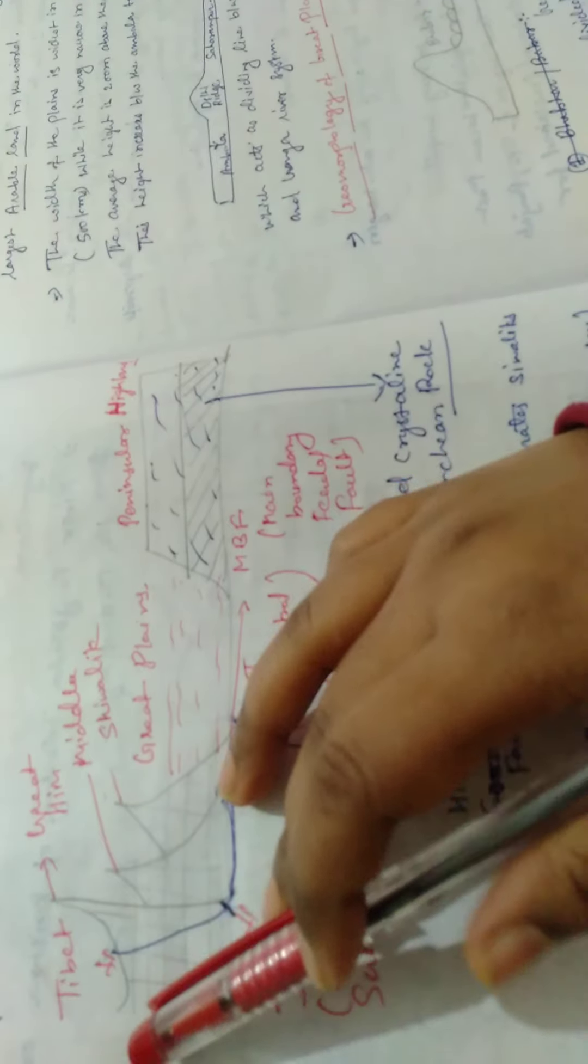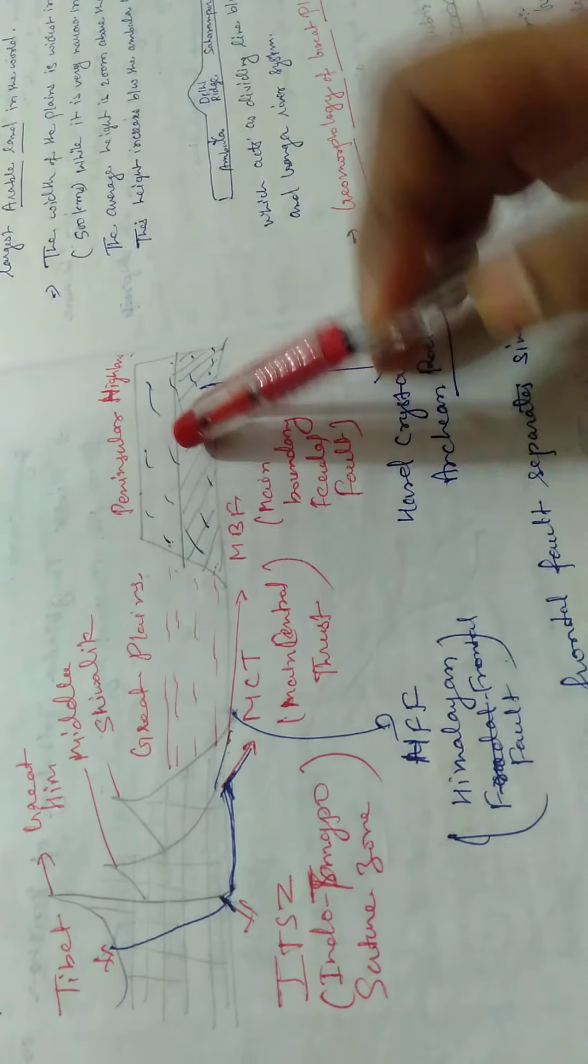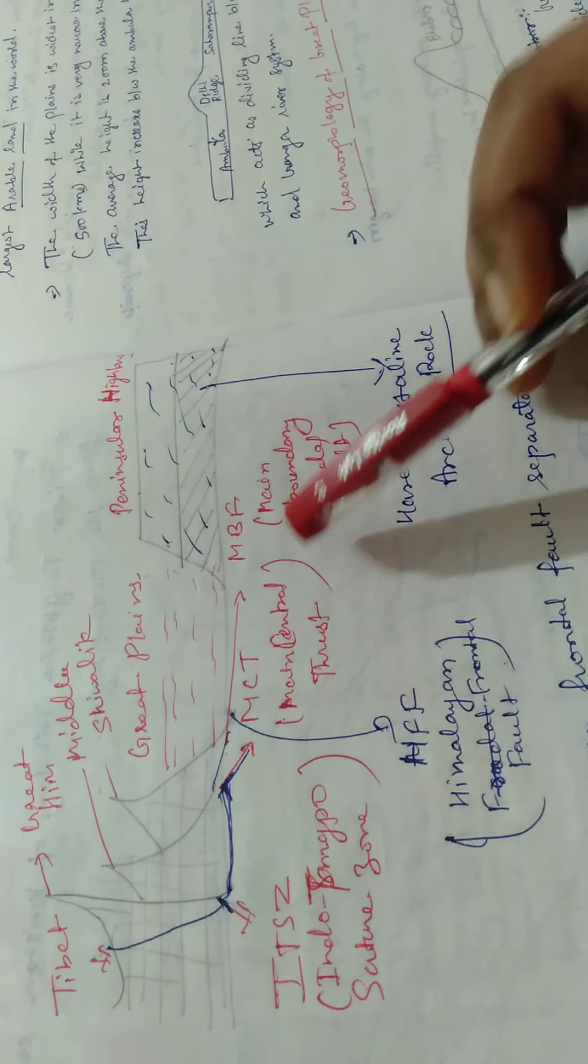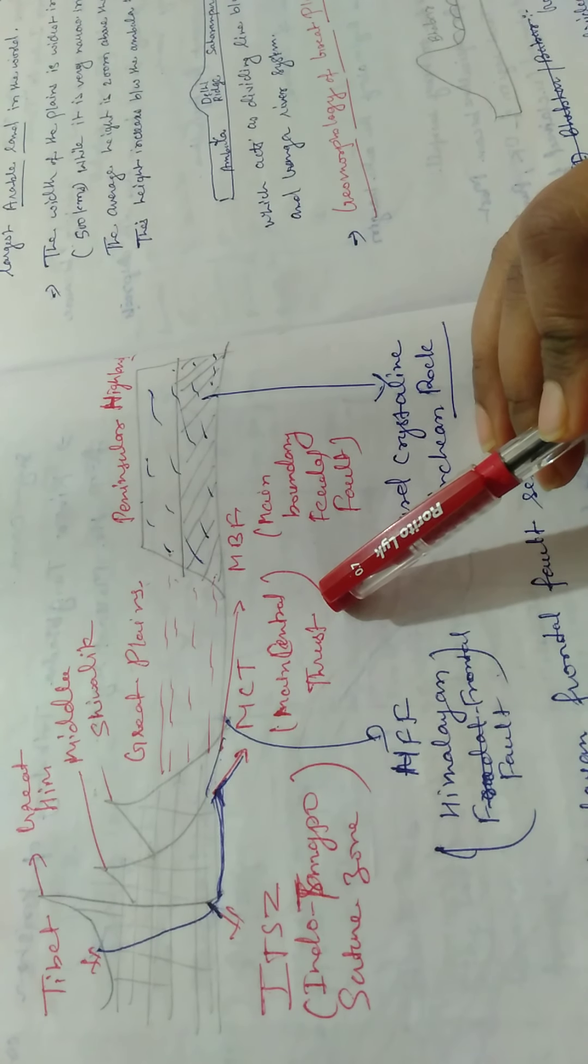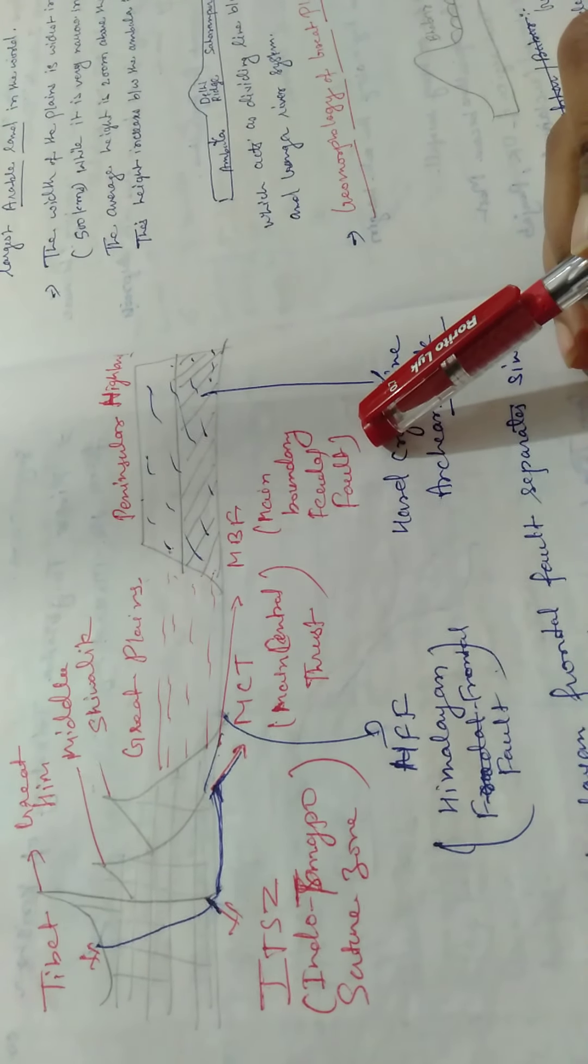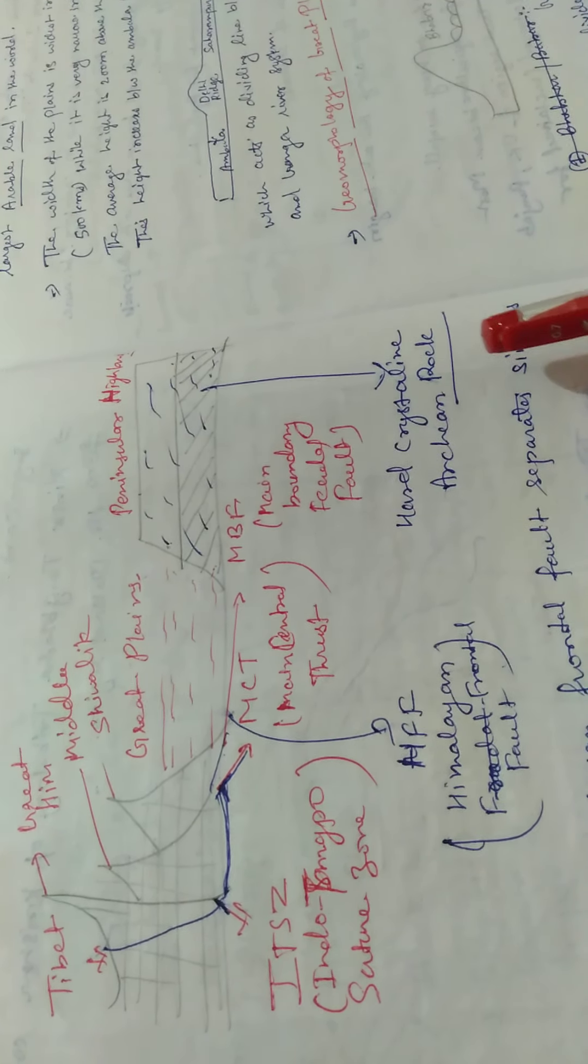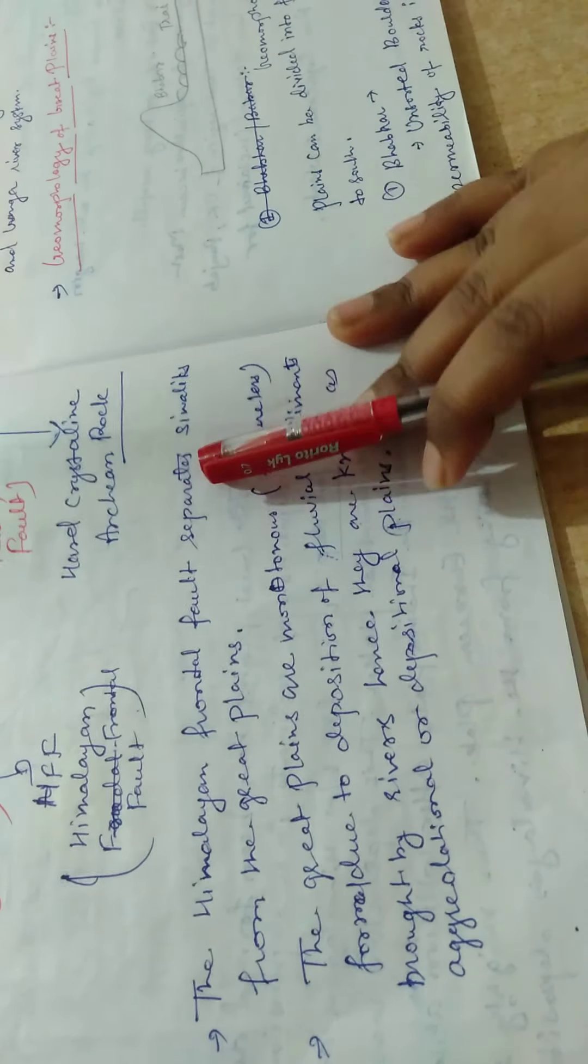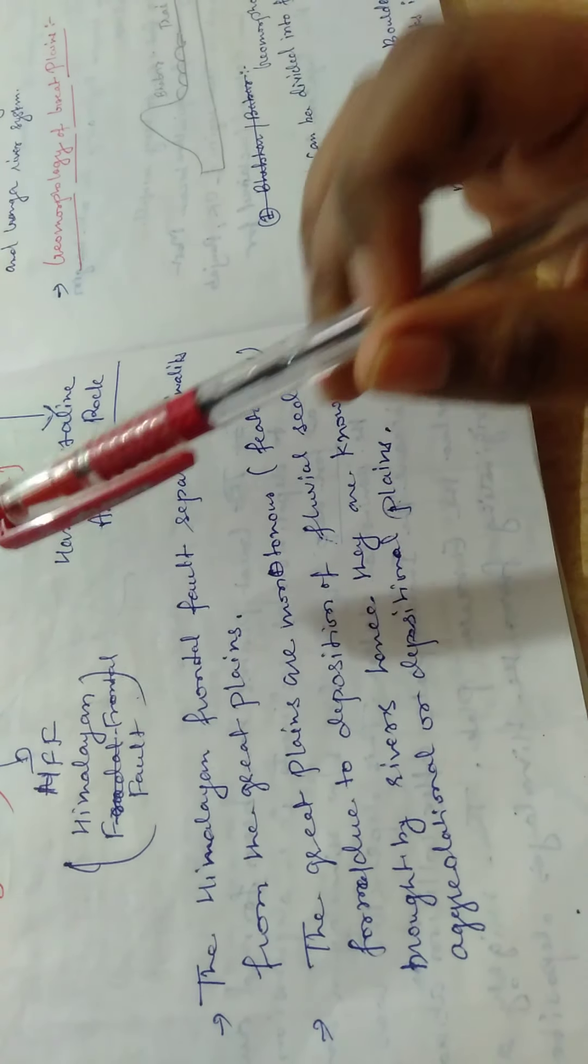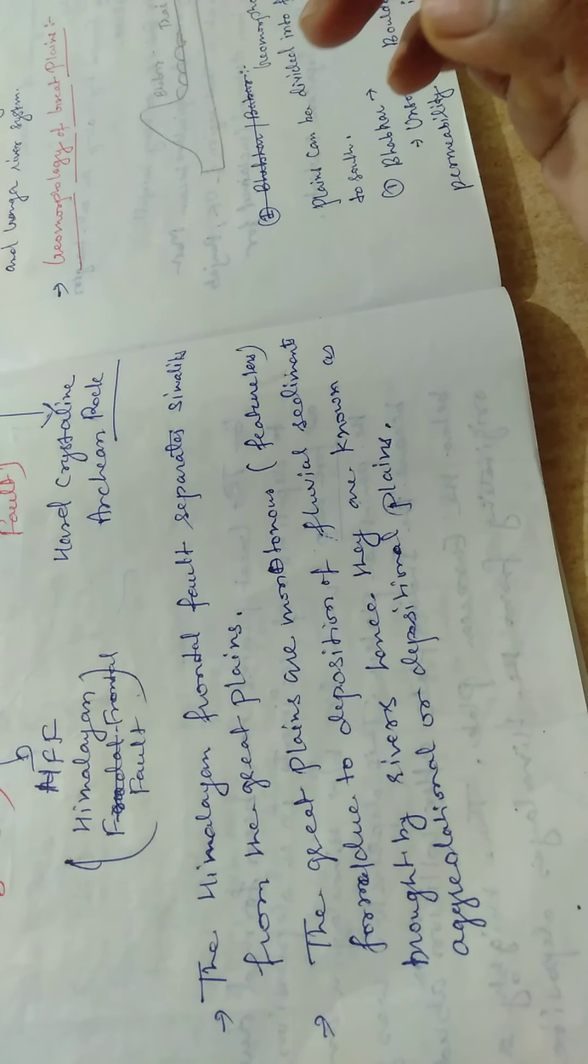Now, this is the figure of the Great Himalaya and Middle Himalaya. What is the Great Plains? This is the Peninsular Highland. It is the Indo-Tsangpo Suture Zone. The MCT is the Main Central Thrust. The Himalayan Frontal Fault is separated from the Great Plains. Then, the MFF separates the Great Plains.